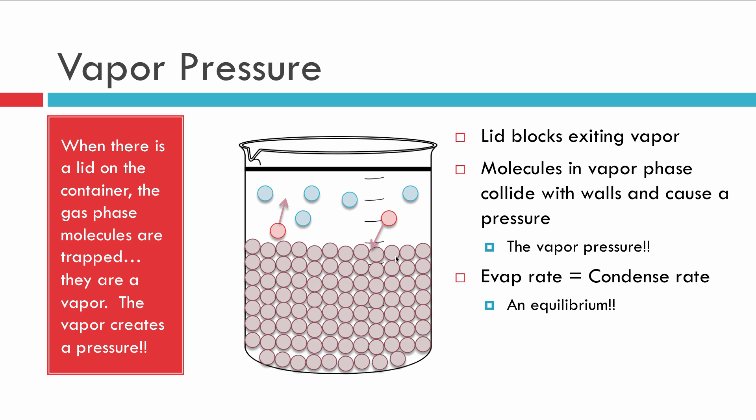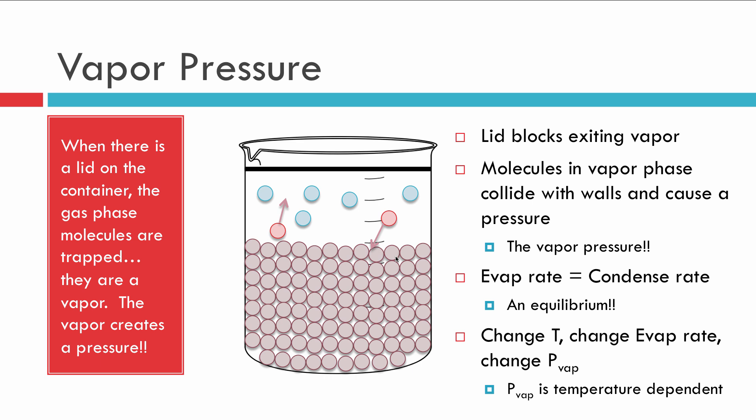This vapor pressure is going to be determined by temperature only — it's only a function of temperature. If we change the temperature, we change the evaporation rate, which means we'll have either more or less gas particles floating freely above. So the vapor pressure is dependent on temperature. If we increase the temperature, we get an increased evaporation rate and more molecules evaporating, which means we need even more molecules in the gas phase so that enough can condense to maintain equilibrium. Therefore, increasing temperature increases vapor pressure, and vice versa — decreasing temperature decreases vapor pressure.